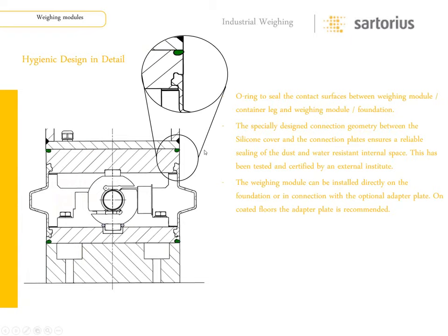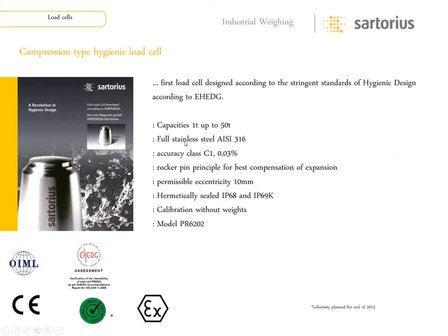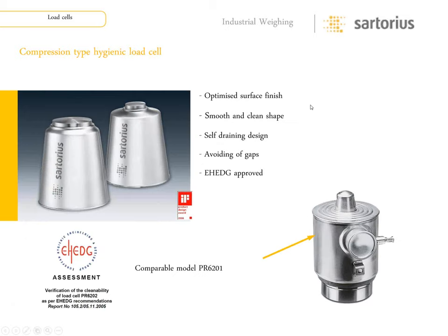The Contigo ranges from 100 kilograms to two metric tons. If you have an application over two metric tons, the 6202 cells can be used up to 50 tons. They are made of NC316 stainless and are accuracy class C1. They have the same internal structure as our 6201 cells — a rocker pin design — but they don't have a surface area for microbes to attach and reproduce. They have an optimized smooth surface, are self-draining, and have no gaps like you would find in a 6201 cell.